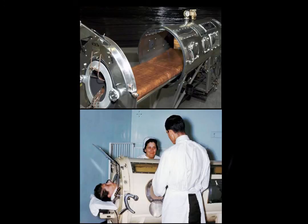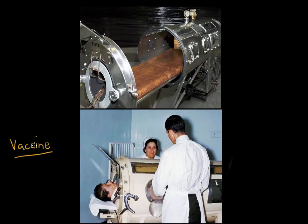Though there is no treatment currently for poliovirus, there is a way to prevent it — through a polio vaccine. Through vaccination and the efforts of the World Health Organization and many other organizations, eradication of polio is very real. The entire Western Hemisphere, including the United States, North America, and Europe, are completely polio free. There are still some cases in the world, but the widespread eradication due to these vaccines has been considered one of the world's greatest medical achievements. Hopefully, in the future, polio can be completely eliminated by the widespread use of vaccination.